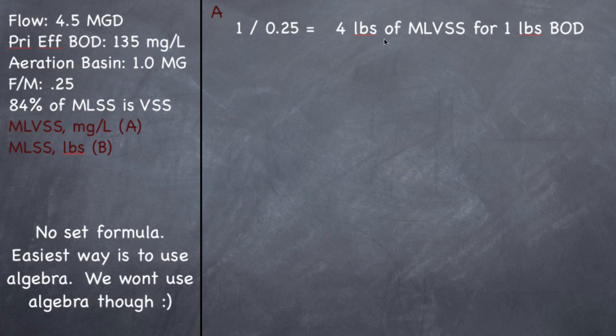So right off the bat, take your F to M and take 1 and divide 1 by your F to M, and that tells you how many pounds you need in the system for every pound of BOD. Now I need to figure out how many pounds of BOD I have so that I can multiply it by 4 to find out how many pounds of MLVSS I have.